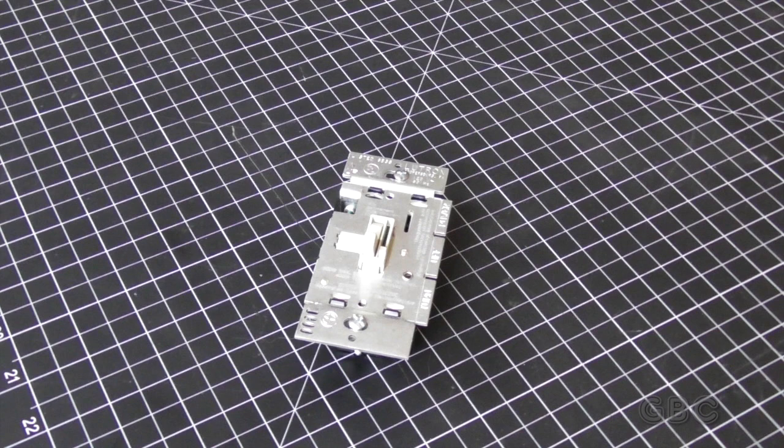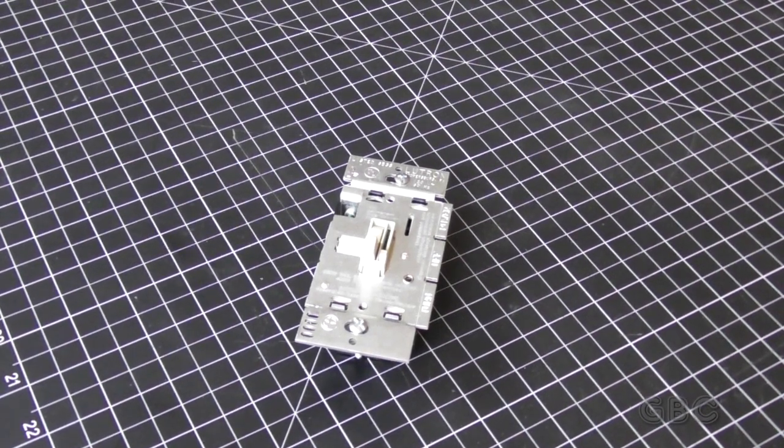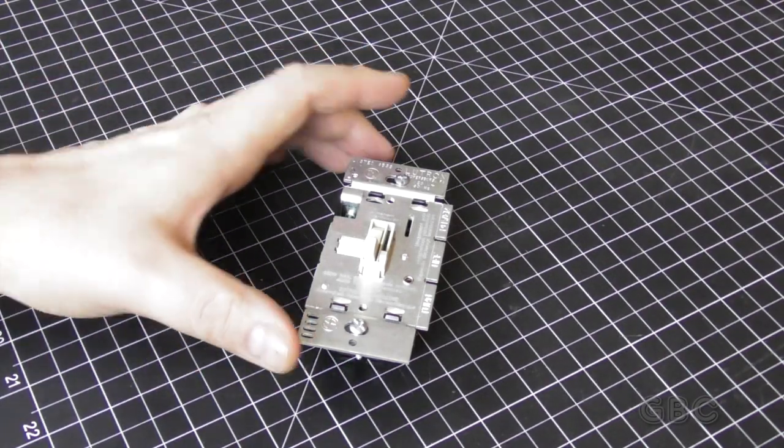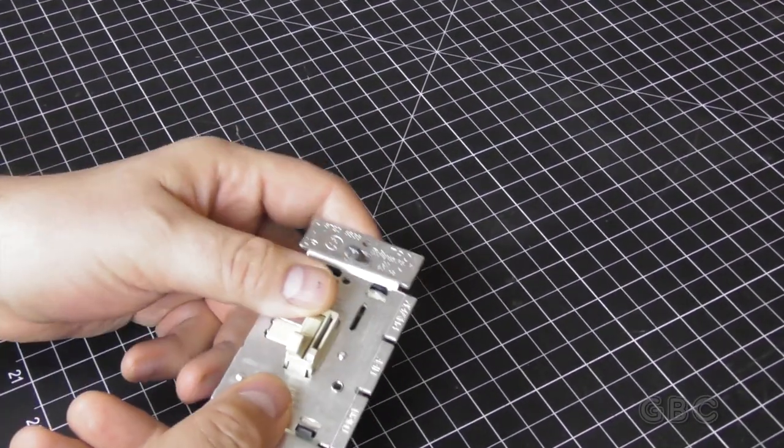Hello and welcome to the GBC Productions channel. This is episode 71. In this video I will be taking apart a three-way dimmer switch.